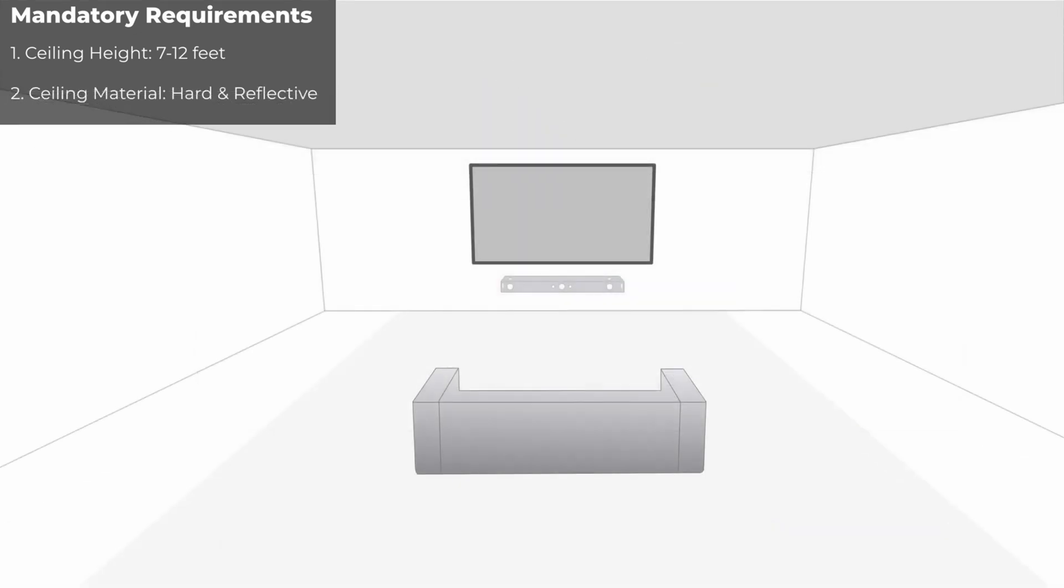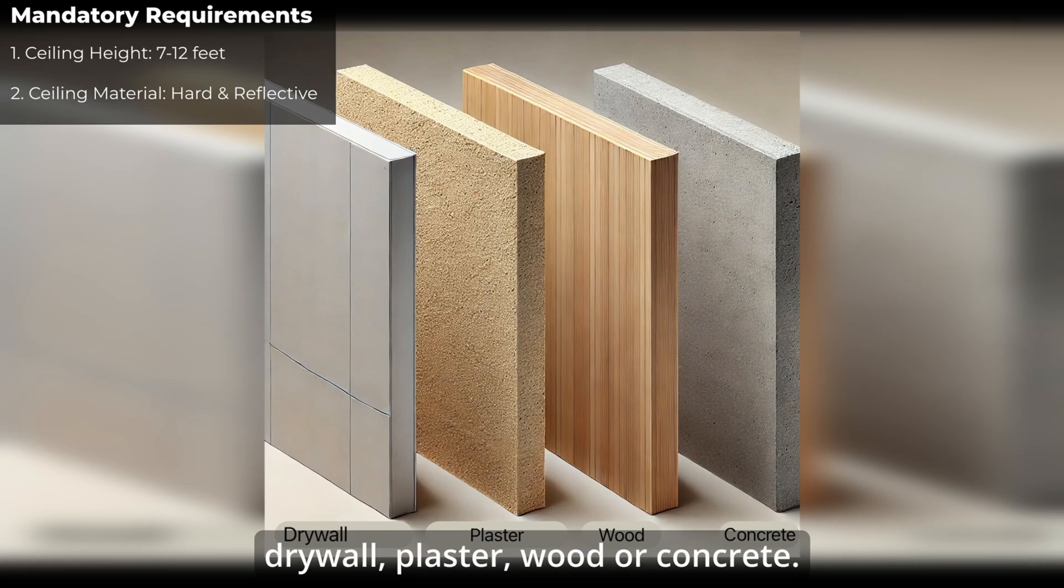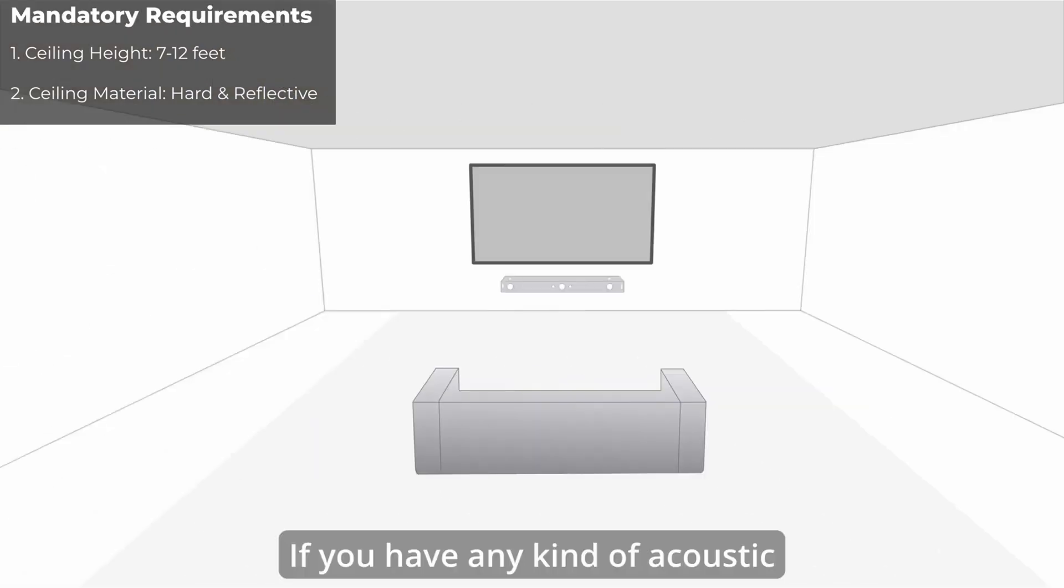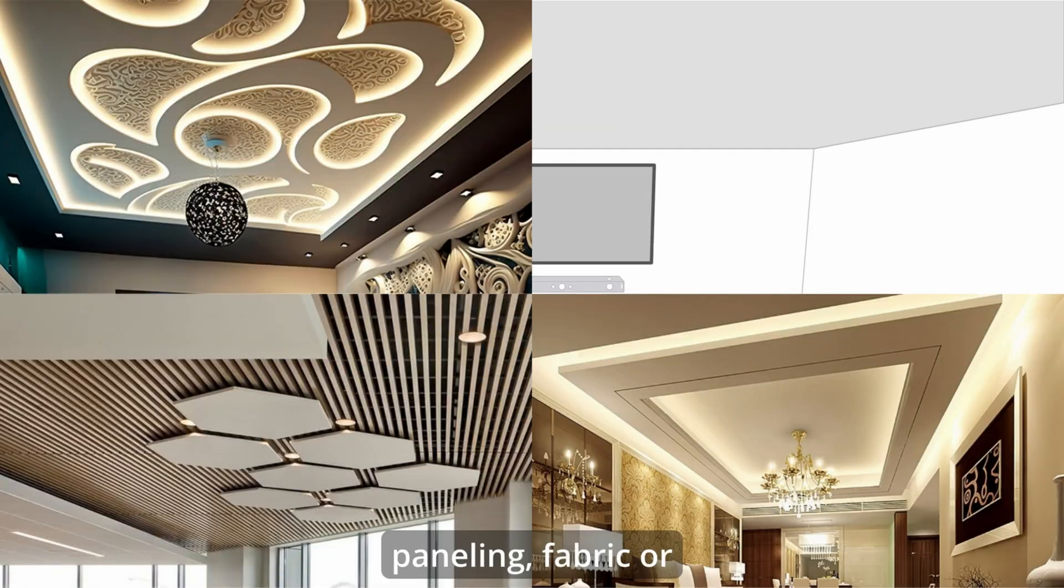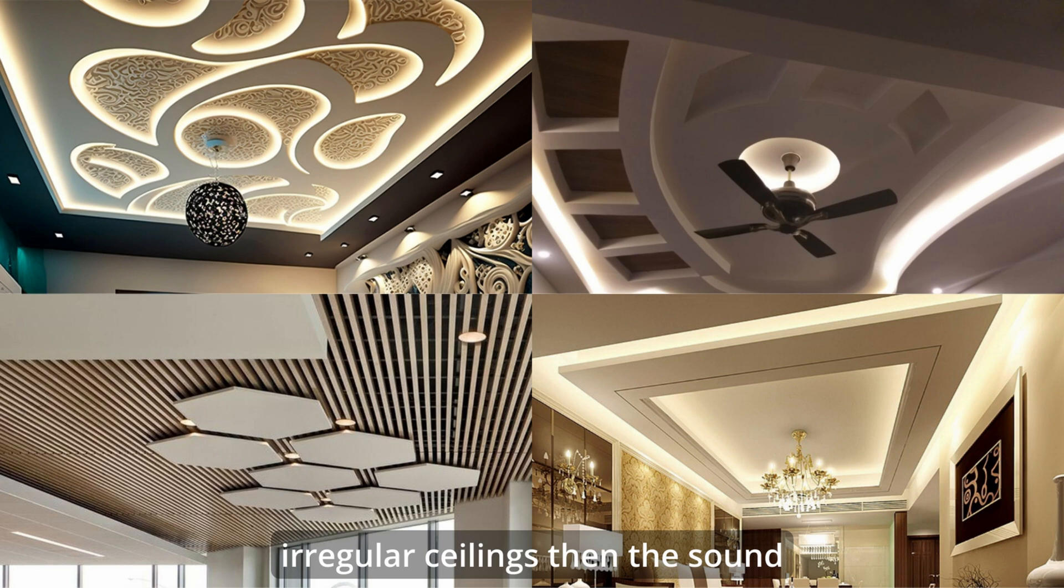Ceiling material. Ceiling material needs to be hard and reflective. The best materials are drywall, plaster, wood, or concrete. If you have any kind of acoustic paneling, fabric, or irregular ceilings, then the sound would just get absorbed or reflected.